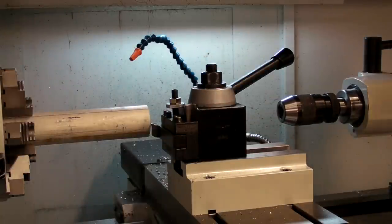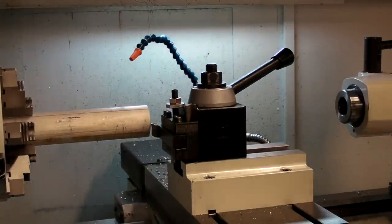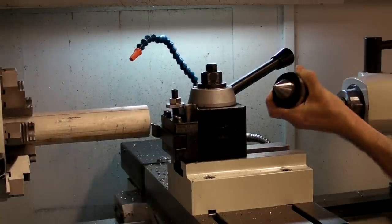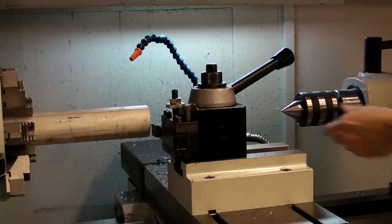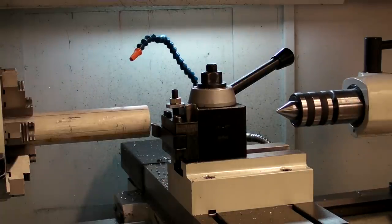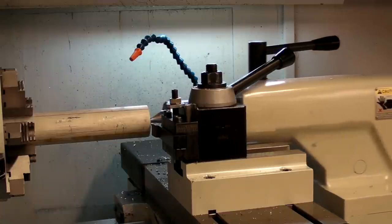The tailstock can also be used to stabilize a long part. Replace the drill chuck with a live center and bring it up tight against the part. Lock both the tailstock and the feed in place, and the part will be securely clamped from both ends.